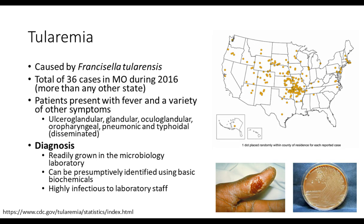Starting with tularemia — tularemia is caused by Francisella tularensis. During 2016, there were a total of 36 cases in Missouri, more than any other state. This disease occurs even outside the range of Amblyoma. Francisella is not just transmitted by the Amblyoma tick; there are other ways of getting this. However, Amblyoma transmission is a major mechanism, at least in the Missouri area.